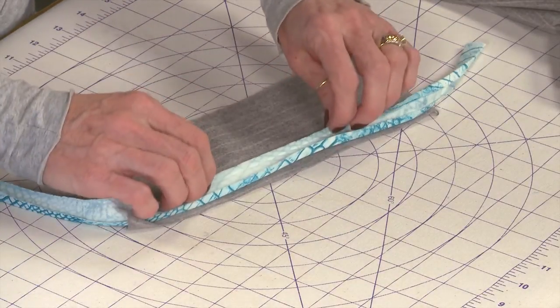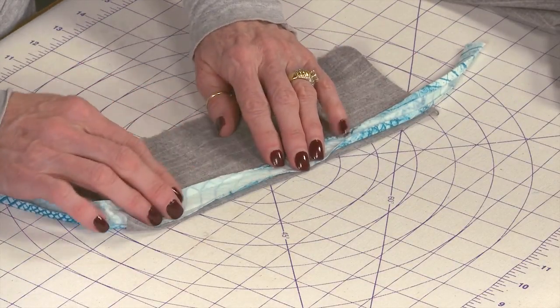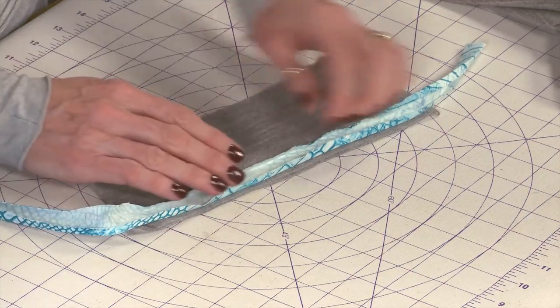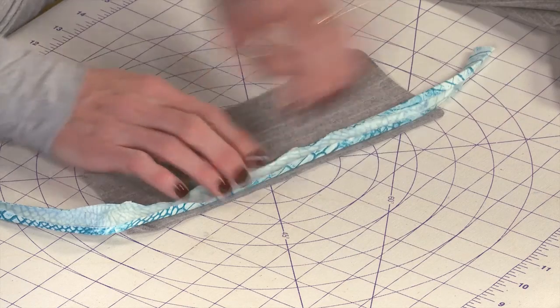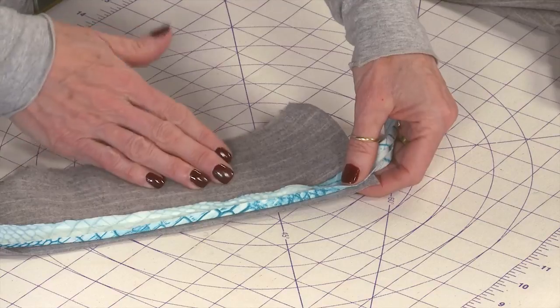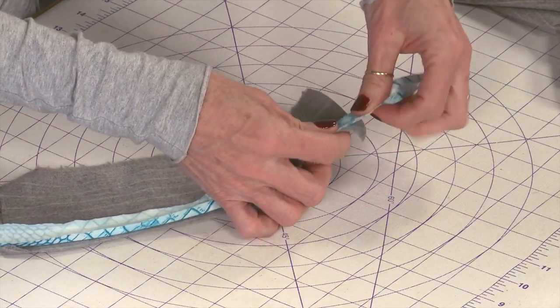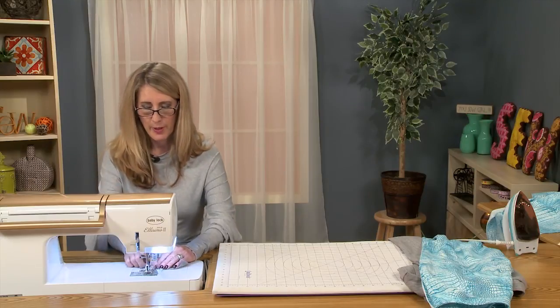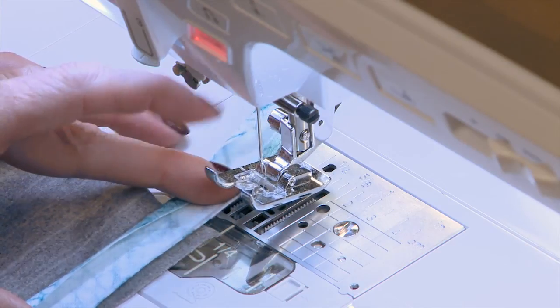Now in order to sew the bias tape onto your garment, you'll see once it's been pressed, you have a nice little ditch here. And of course, I have a contrasting fabric here just so it makes it a little bit easier for you to see. So we'll take it over to our machine and we're going to stitch right in that little ditch.